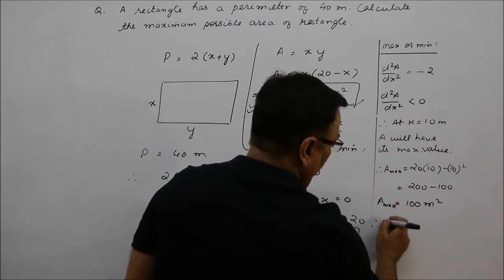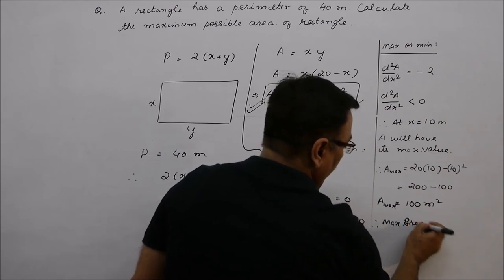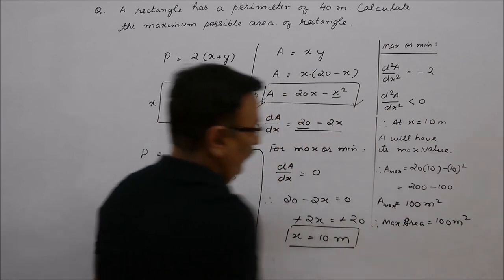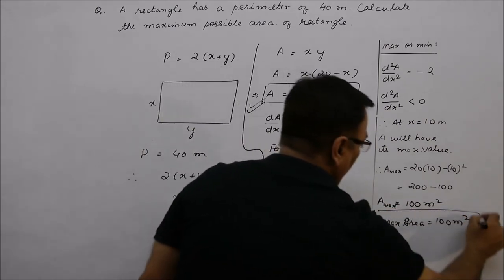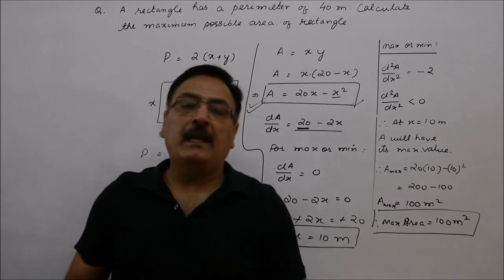Maximum area is equal to 100 meter square. So, maximum area of the rectangle, we have got 100 meters square. This practical application, you have seen.